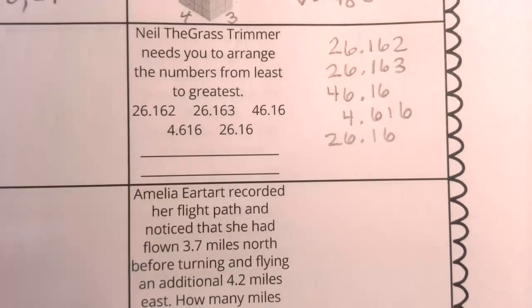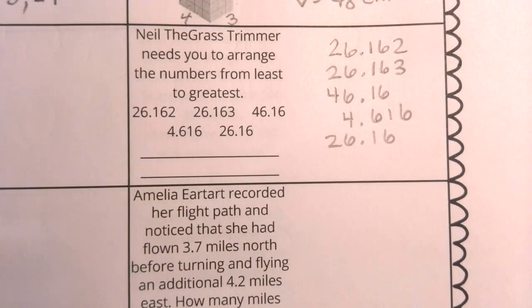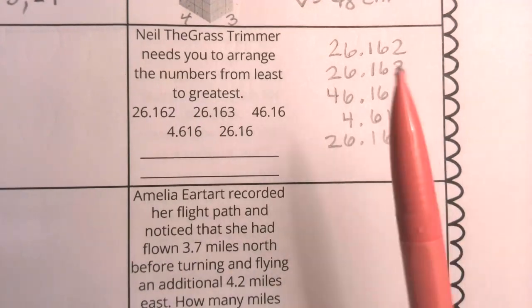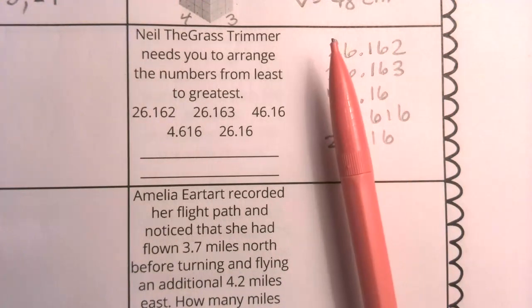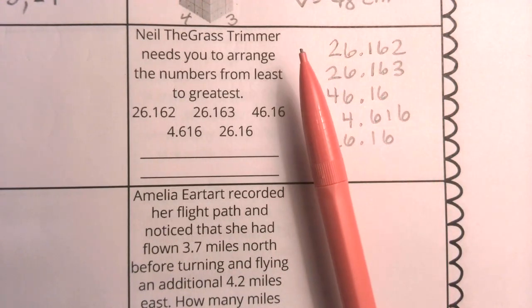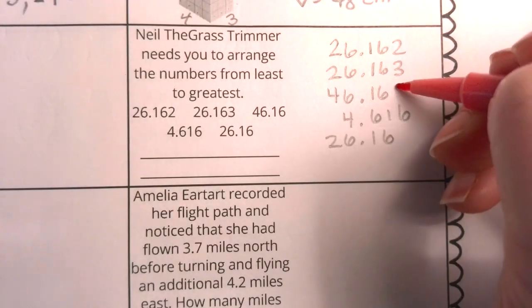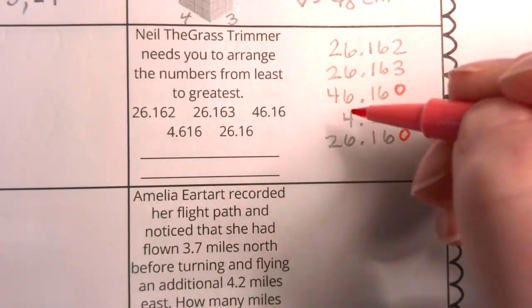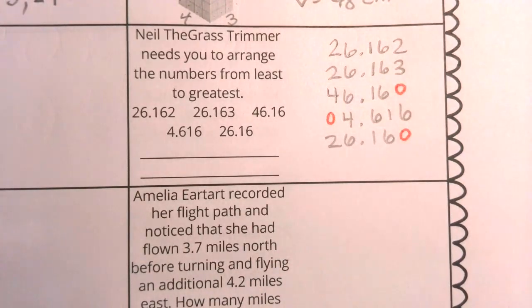Now we're going to take a look at Neil, the grass trimmer. He needs you to arrange the numbers from least to greatest. Now the easiest way to do that, boys and girls, to make sure that we're comparing like place values is to line them up. Now as soon as I look at this, I notice that there are some places that don't have partner place values. So I'm going to plug in some zeros there.